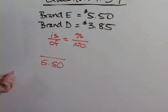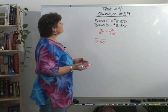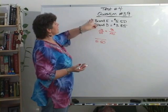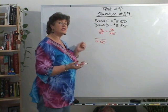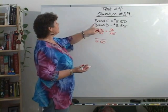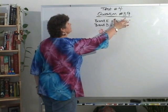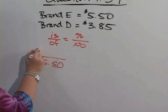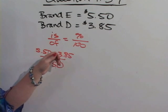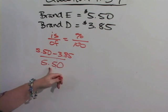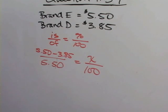So what they're saying is there's a difference between brand E and brand D. The amount of difference here is the amount of money that you save by buying brand D, which would be $5.50 minus $3.85. That is your savings equals the percent over 100.